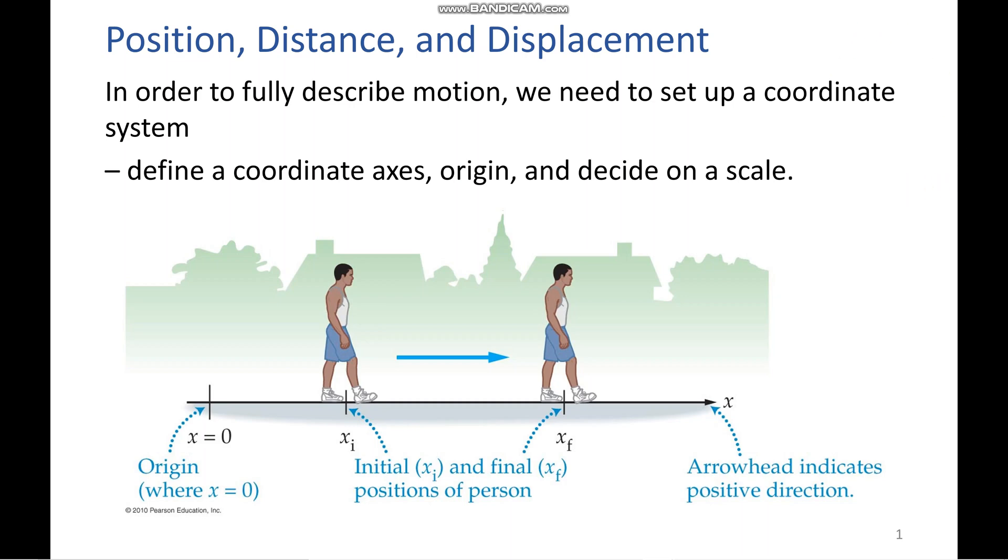Once you've figured out the direction of these, your second step is to define your origin. This can be wherever you see fit. For this example here, we have it at x equals zero. The third thing you need to do is decide on a scale. Once you've done that, you should be in a good position to visualize your problem a bit easier.